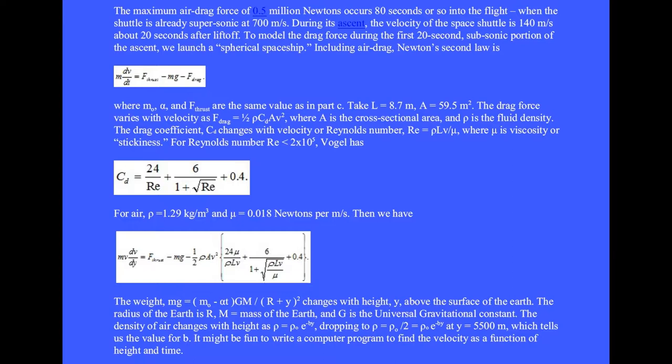But the weight mg is m0 minus alpha t times gm over r plus y squared. It changes with height y above the surface of the earth. The radius of the earth is capital R, capital M is the mass of the earth, and capital G is the universal gravitational constant.